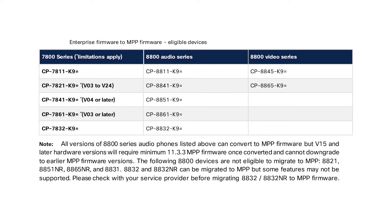The first thing you need to do is make sure your phones are available to migrate. To check the most recent list, navigate to the Cisco phone conversion guide — the link is in the description. Scroll down and check the model of your phone and the version to make sure it's possible.